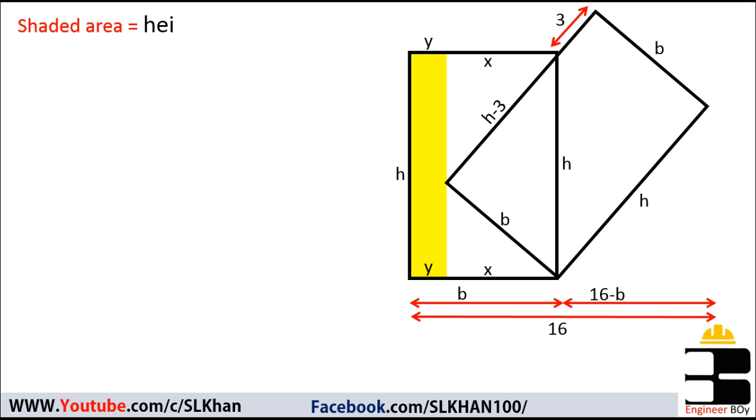So the shaded area must be the breadth times height of that yellow rectangle, or just h times y, which means we have to determine these two elements. Let's focus on the overall breadth of the rectangle, which should be 8 because it's half of 16.